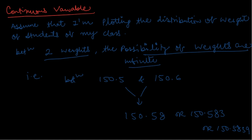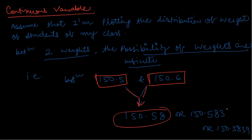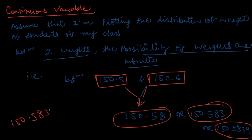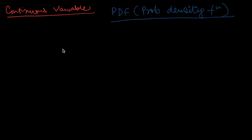For example, between 150.5 and 150.6 we can have 150.58, or 150.583, or 150.5839, and so on. Our scale will end but the possibilities won't — that is precisely the definition of a continuous variable.